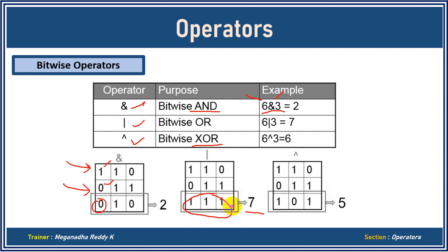The last bitwise operator is XOR — exclusive OR — which means one should be true and one should be false. Even if both are true, XOR will be false. So 1 XOR 0: one is true, one is false, result is true. 1 XOR 1: both are true so exclusive OR gives false. 0 XOR 1: one is false, one is true, so it's true. When you convert this binary result to decimal, you get 5.